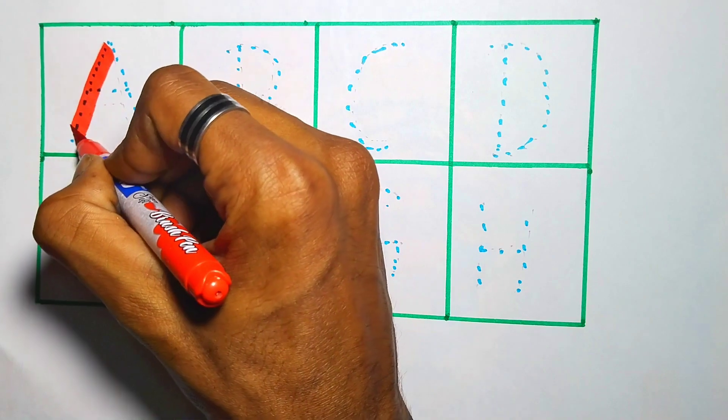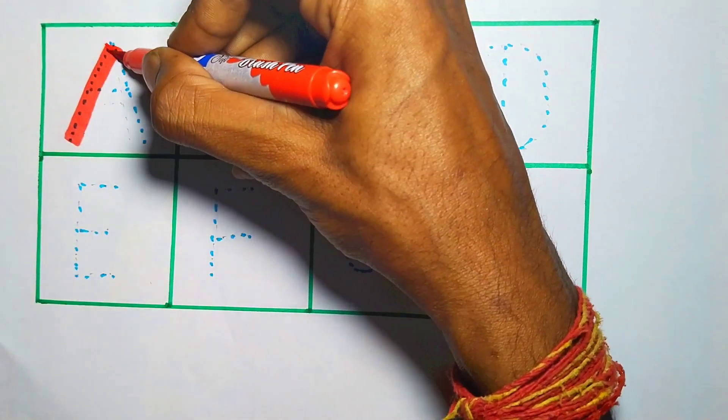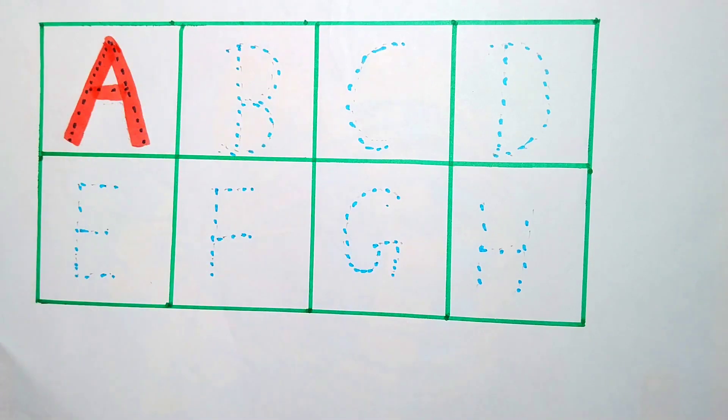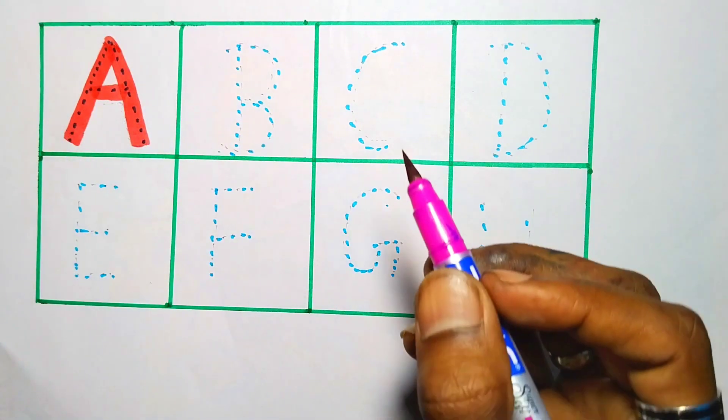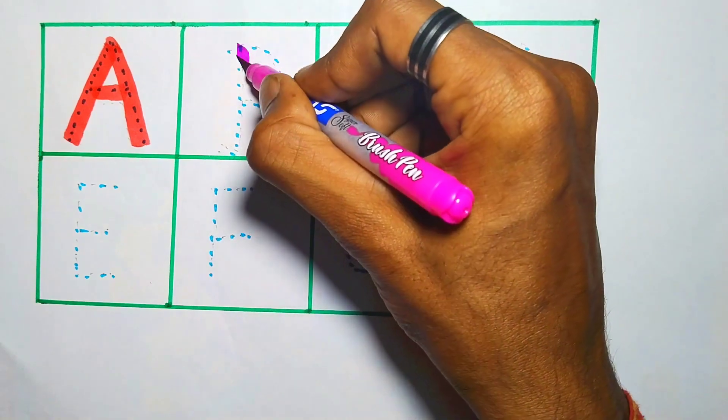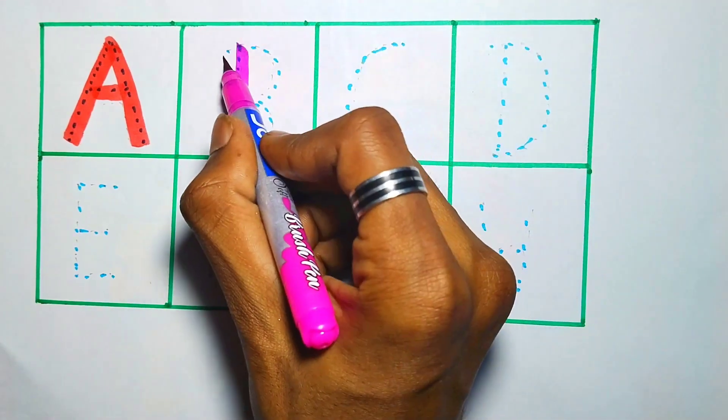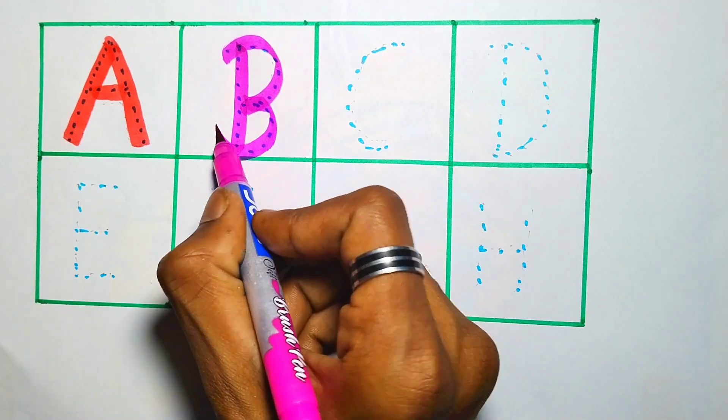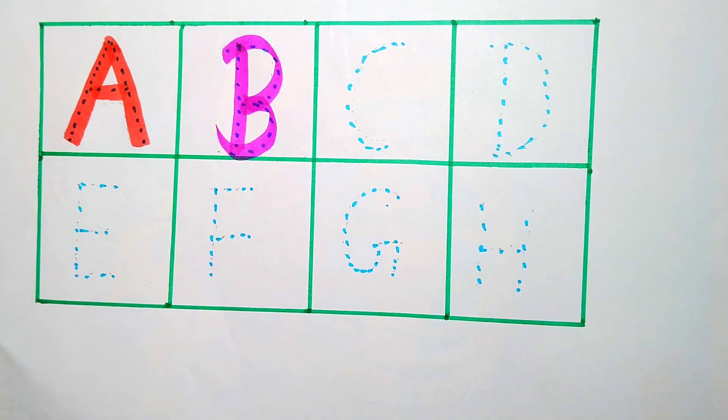Red color. A, A for apple. Pink color. B, B for ball. B, B for ball.